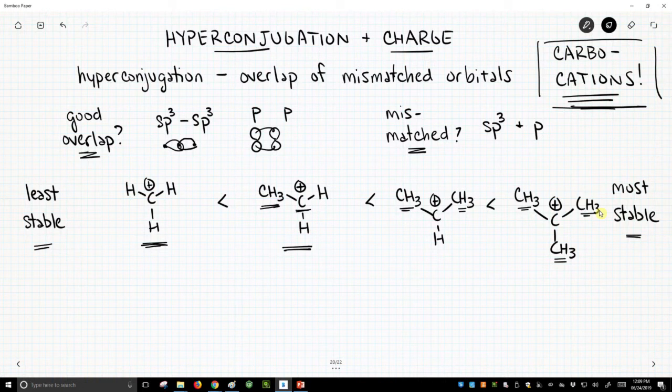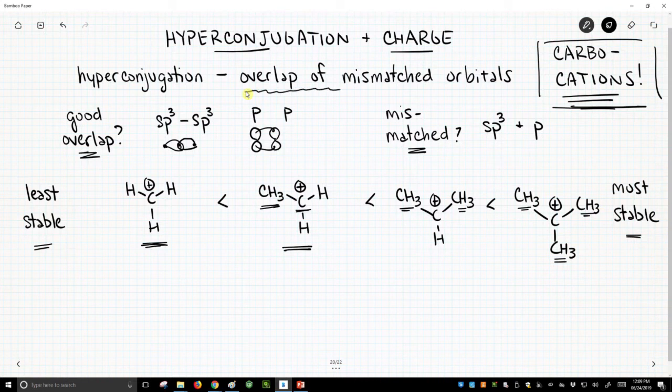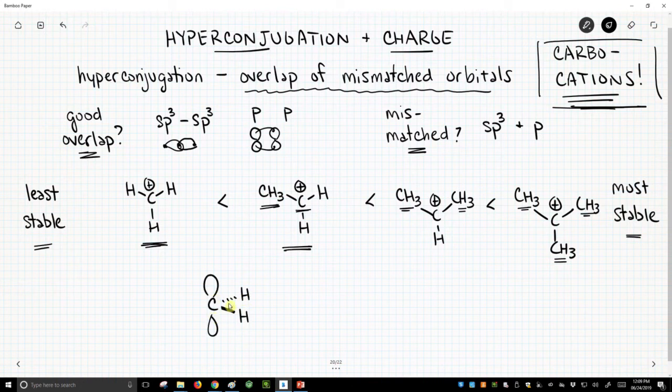So how do we explain it? Well, of course, we're going to explain it through hyperconjugation, and we're going to overlap mismatched orbitals to do this. So here is our carbon, and I'm going to draw it flat. It's sp2 hybridized. It has a vacant p orbital on it, and the carbon has a positive charge.